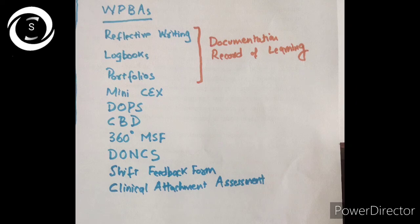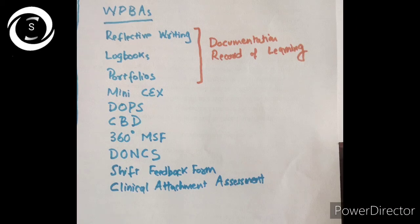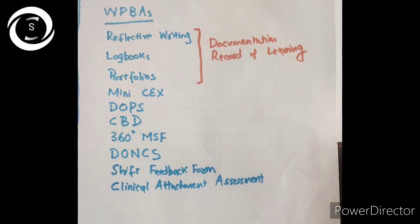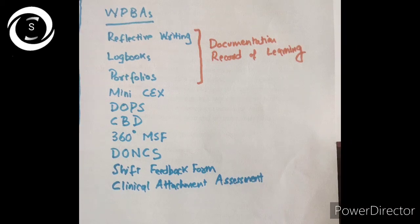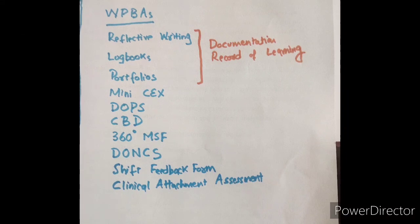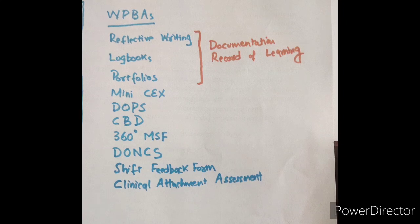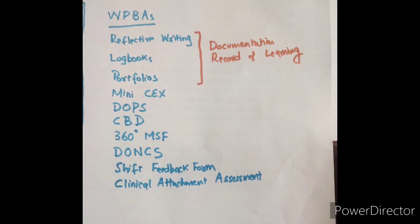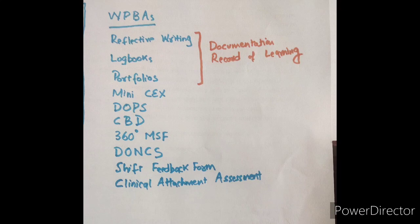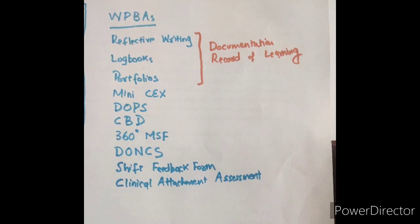After watching this video, you can have some idea of how workplace-based assessments are done. They can be divided into global assessments — like portfolios and 360-degree multi-source feedback — and encounter-based assessments — like Mini CEX, DOPS, DO-NCS, and Mini-PAT. The proformas of direct observation assessments are almost similar. They give formative assessment and can help improve trainee performance. Thank you very much.